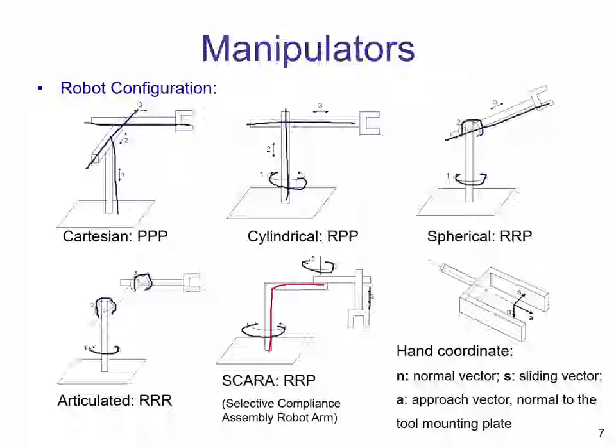Now, very important: we're going to talk about the hand coordinate here. Instead of a hand, we might think of the end effector, and the end effector is going to have three axes. These three axes are very important because they give us information about the orientation of the end effector. So we're going to have an approach vector, a normal vector, and a slide vector. This is very important and we will talk about this a bit later.